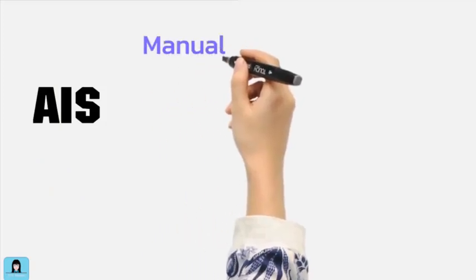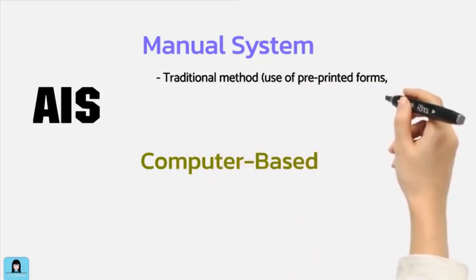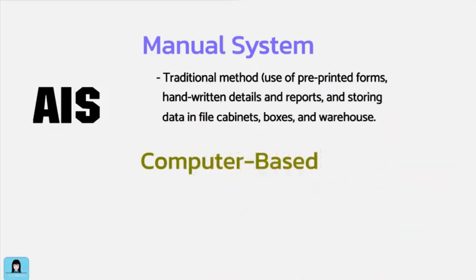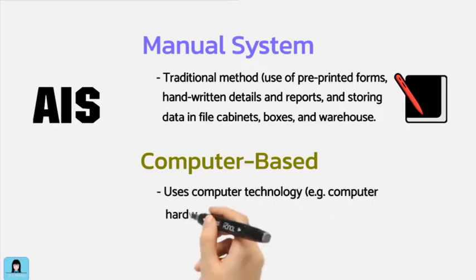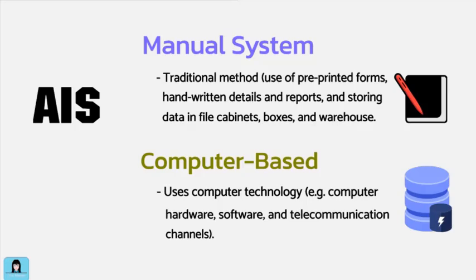The accounting information system of a business organization can be manual, computer-based, or a combination. A manual system collects and processes data and communicates information using the traditional method, such as the use of pre-printed forms, handwriting the details and reports, and storing the data in file cabinets, boxes, and warehouses. A computer-based system employs computer technology, which is made up of computer hardware, software, and telecommunication channels such as the internet.